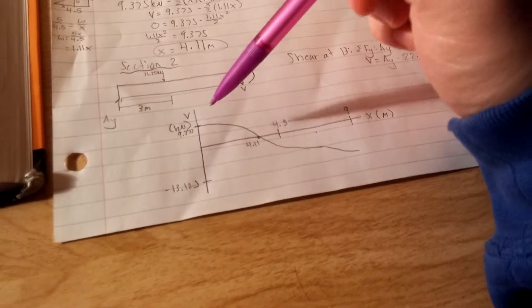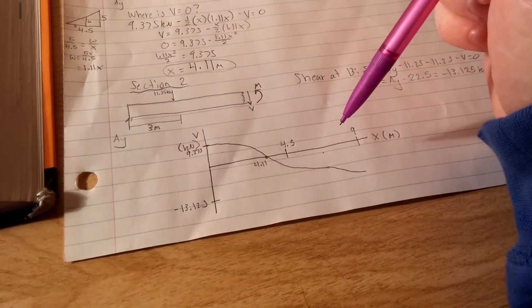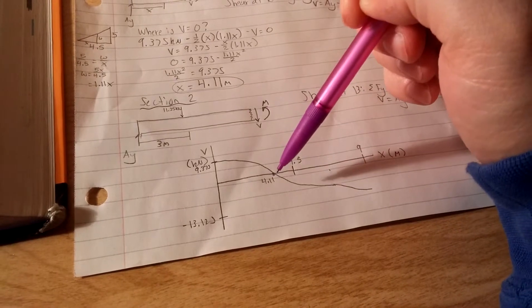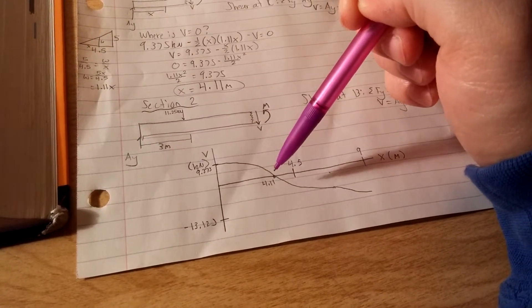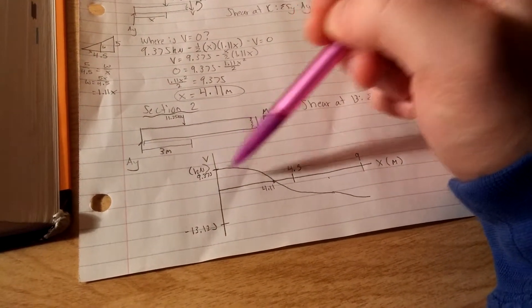Taking all of our data, we can draw our shear. Shear is in kilonewtons, X is in meters. We have our point at 0, 4.11, our initial, and then we have our final. So that's our shear diagram.